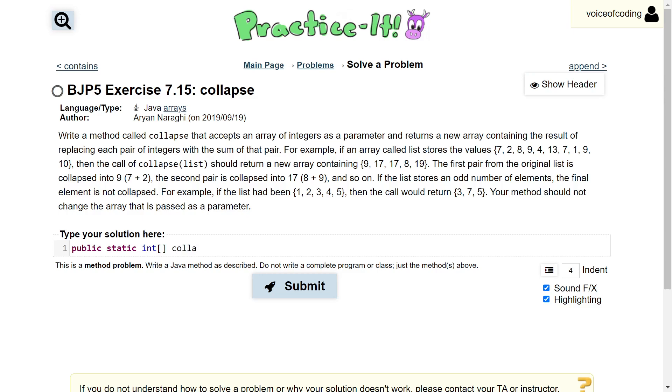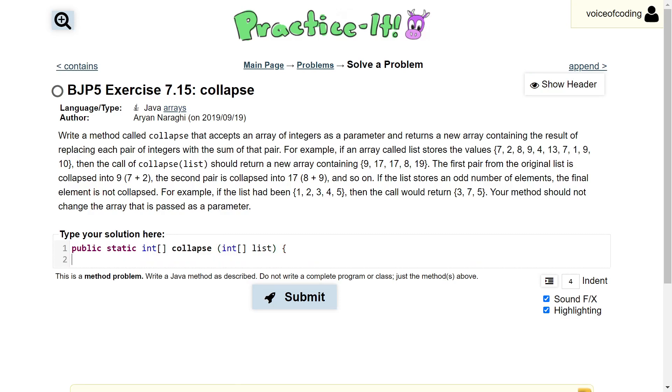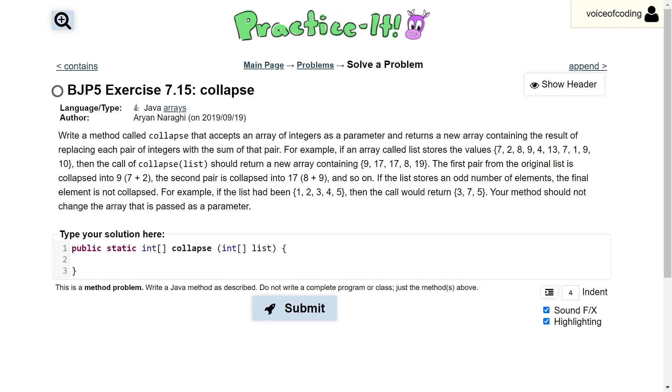The name of our method is going to be the name of the problem, so collapse. And this will be taking in the parameter list, which is going to represent our original list of integers.